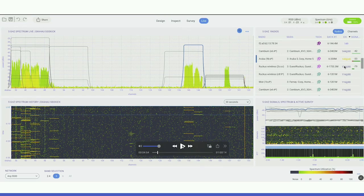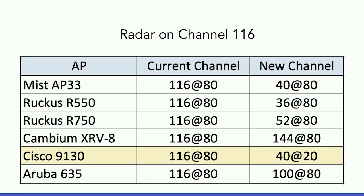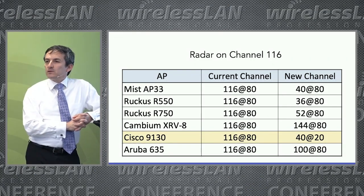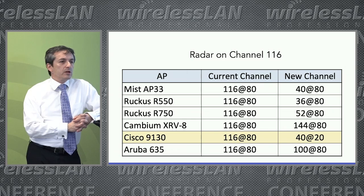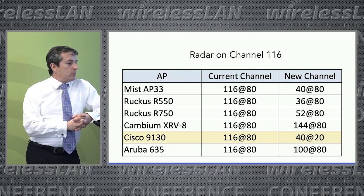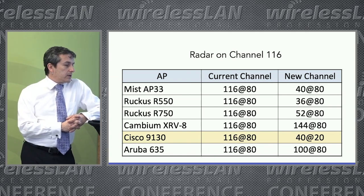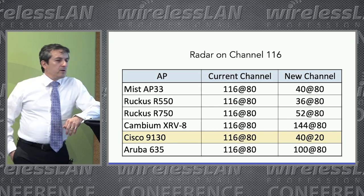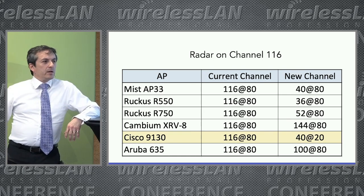So how is it that devices will move? Because evidently they all left, but they all kind of did different things. I had the APs on the screen so you can read them yourself. Some went up — the Mist went down actually from 116 to 40. The Ruckuses went a different direction, went up, different channels. Notice that the Cisco 9130 went to a different operating class.